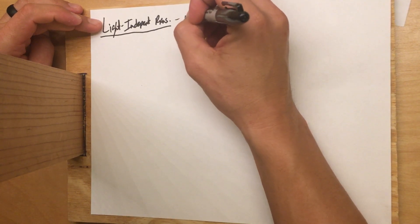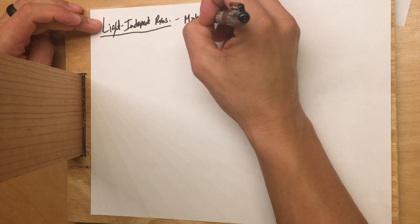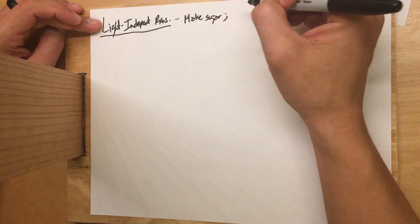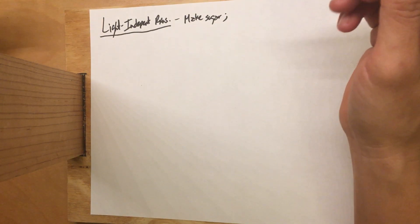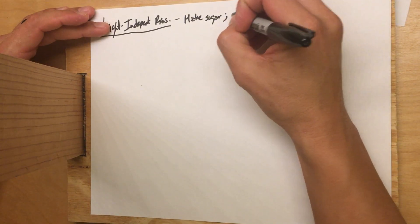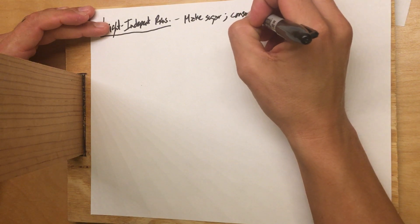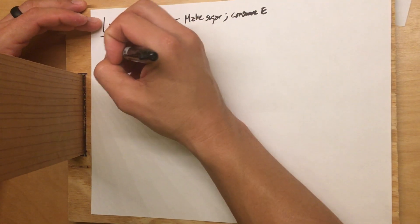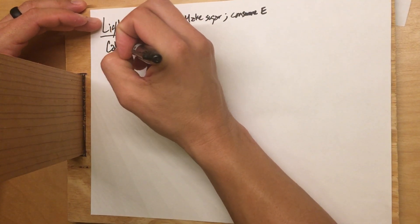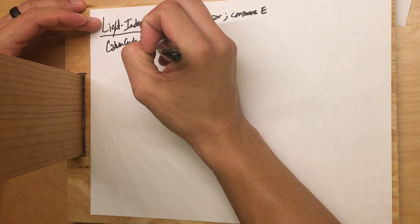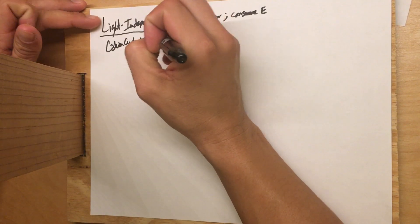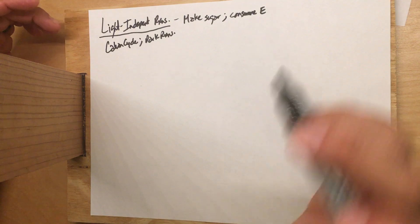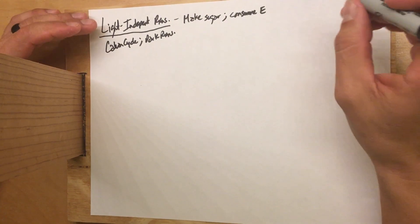In the light-independent reactions, this is where we are actually going to make sugar. What we're not going to talk about is making energy — up until now every reaction we've talked about has in some way made energy, but in this case we're actually going to consume energy during the light-independent reactions. These are also sometimes called the Calvin cycle, or the dark reactions, which is kind of misleading because they don't necessarily happen at night — they just don't need light. But they do need the products of the light-dependent reactions.